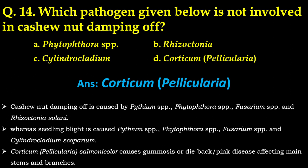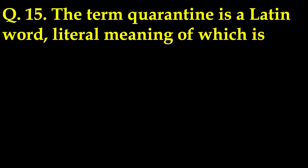Which pathogen given below is not involved in cassava damping off? The answer is Corticium (Pellicularia). Cassava damping off is caused by Pythium species, Phytophthora species, Fusarium species, and Rhizoctonia solani, whereas seedling blight is caused by Pythium, Phytophthora, Fusarium, and Cylindrocarpon scoparium. Corticium/Pellicularia salmonicolor causes gummosis or pink disease affecting the main stem and branches.